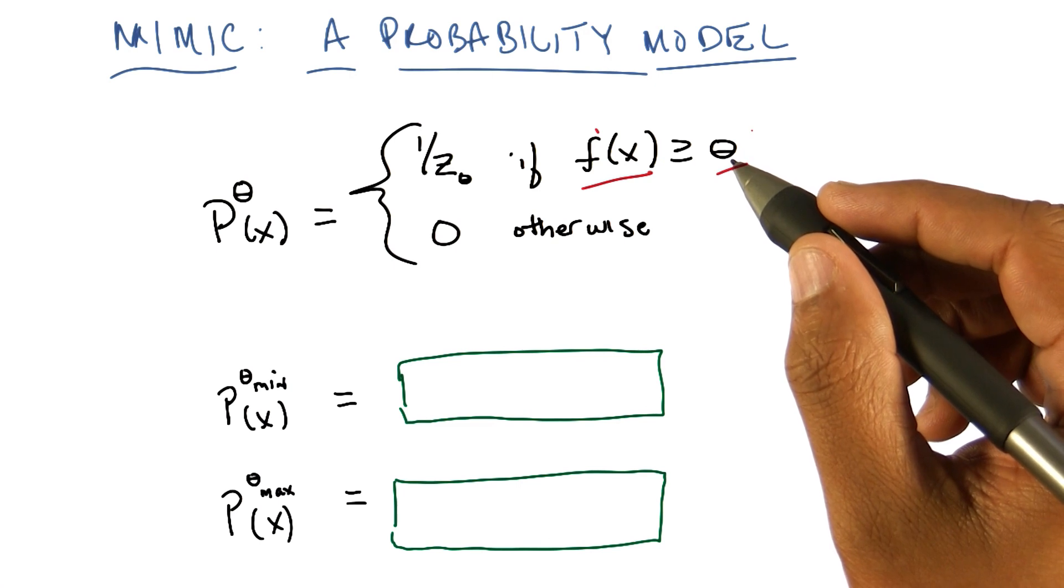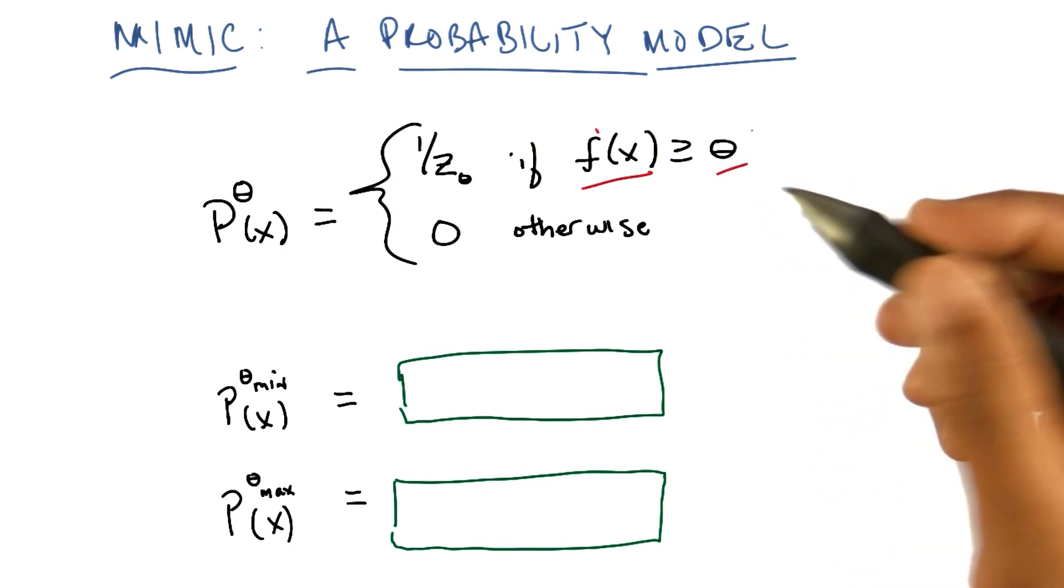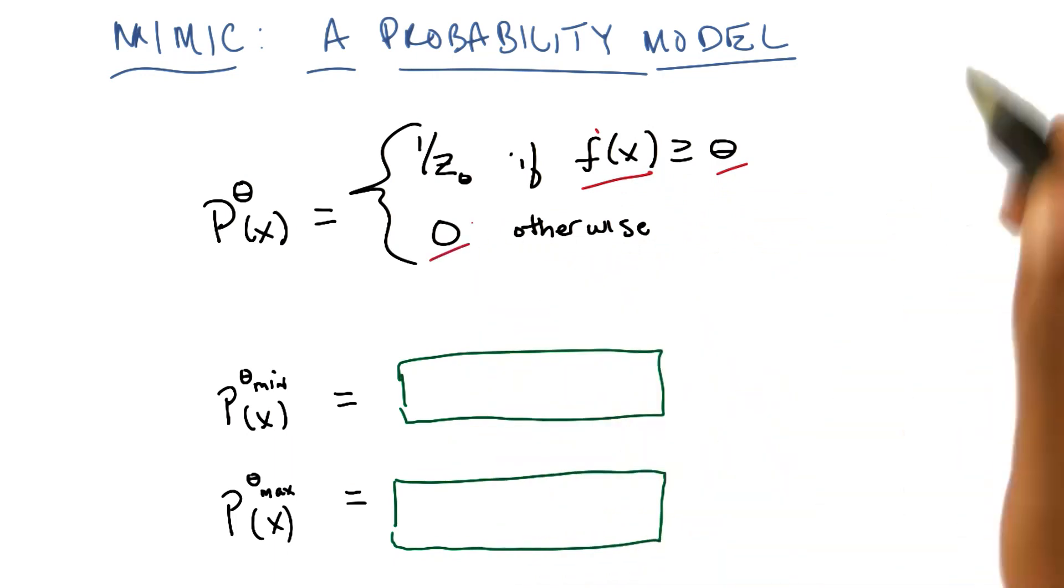then everything that's above that slice, we're going to sample uniformly from that collection. That's right. And everything below it, we will simply ignore. It doesn't happen. It doesn't get sampled from. Exactly.